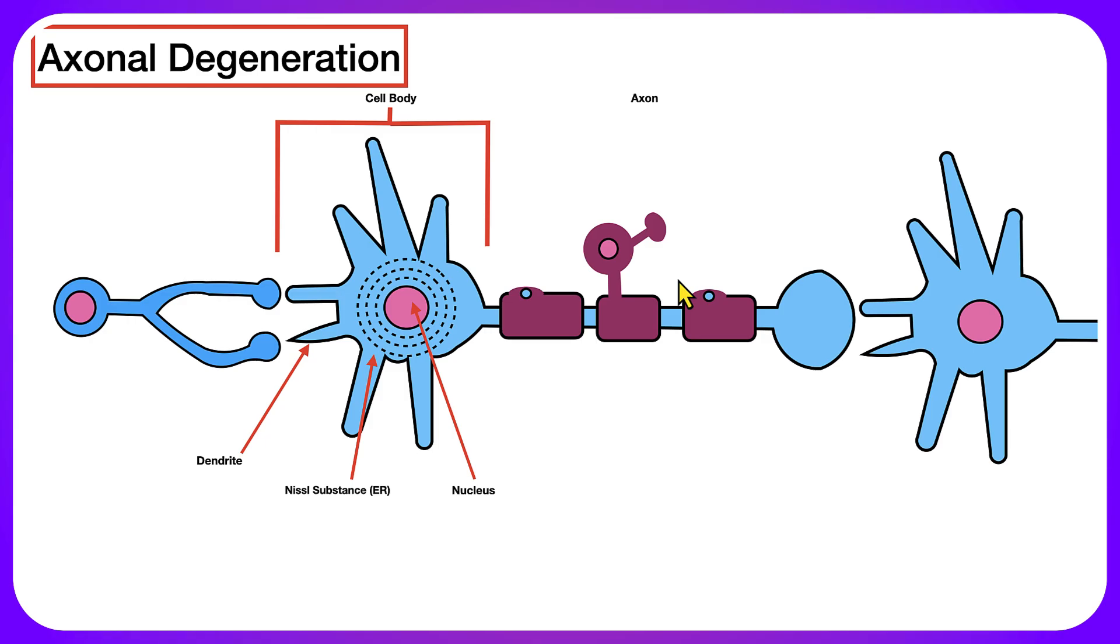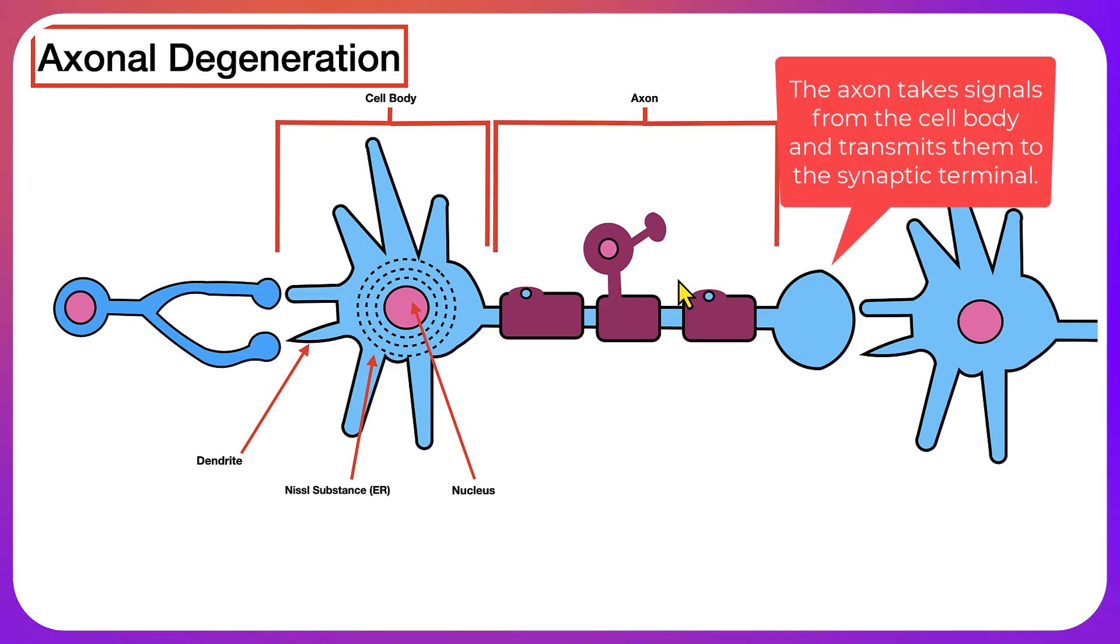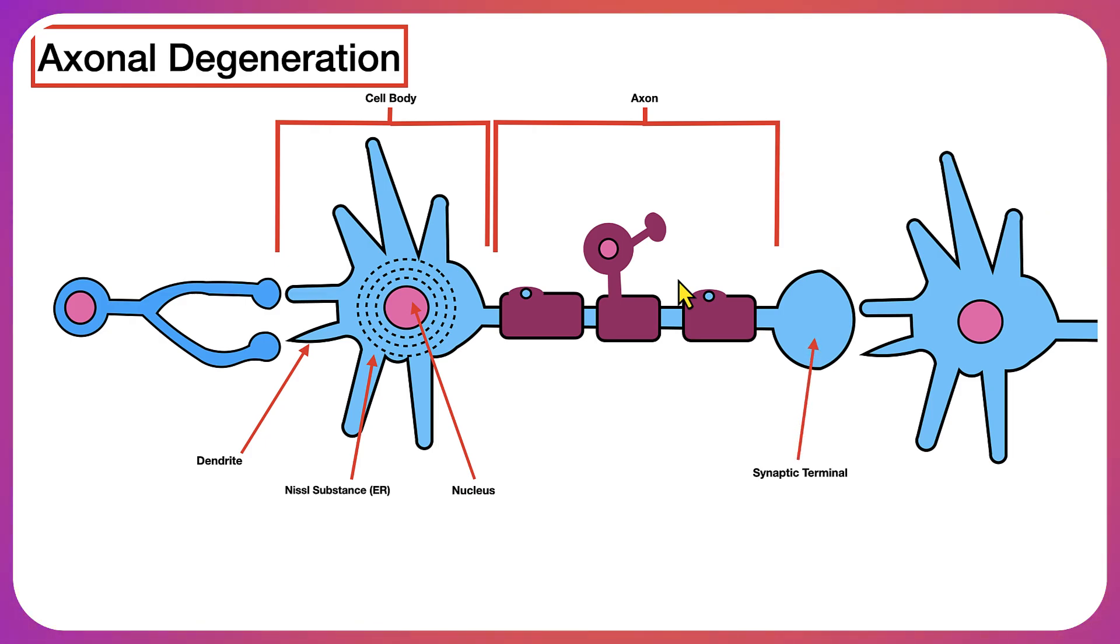In addition, we also have the axon. The axon also projects off of the cell body, and it's going to be responsible for taking information from the direction of the cell body to the synaptic terminal. In the synaptic terminal, we see electrical signals converted to chemical signals. These chemical signals are going to be neurotransmitters, which are released from the synaptic terminal onto target cells.